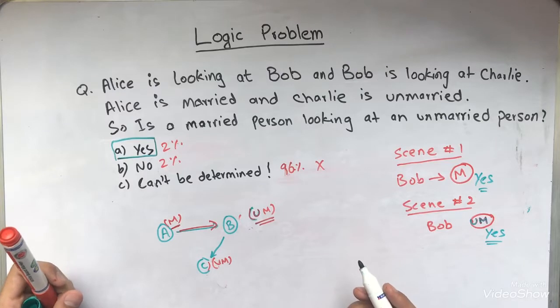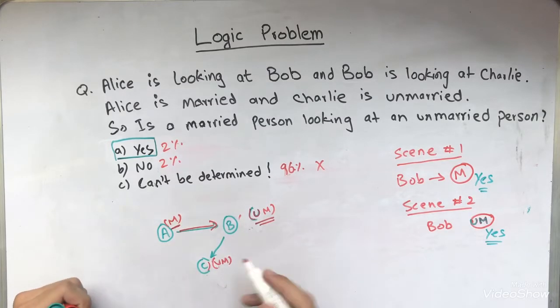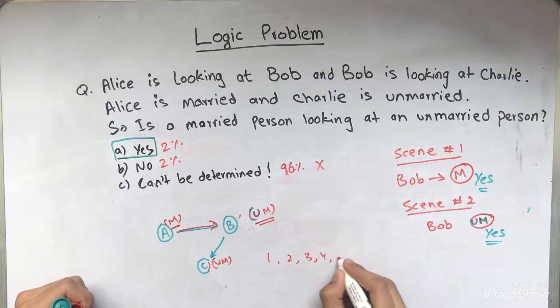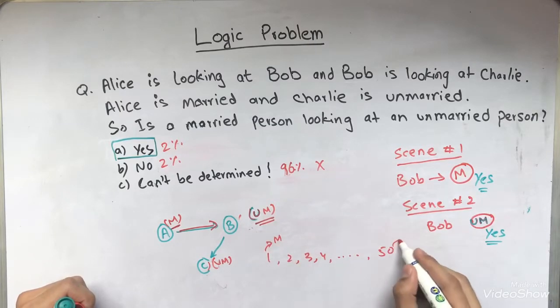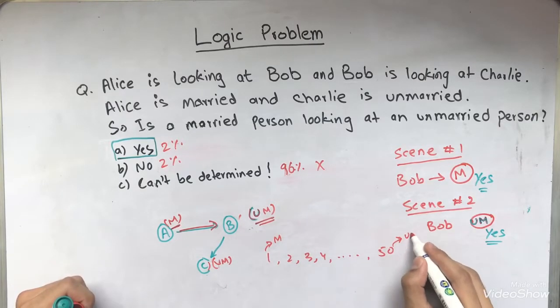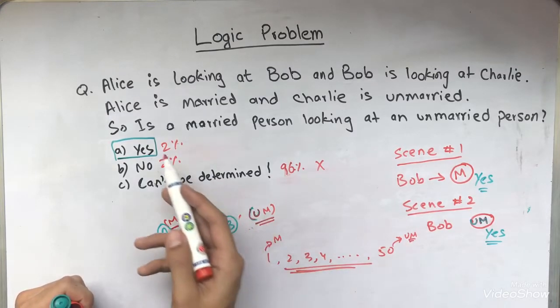We can use a similar logic in many other problems. Like I just found another problem that was similar, that actually had a similar logic in it. That if we have people 1, 2, 3, 4, up to 50. So if the first person is a married person and the last person, the 50th person, is unmarried, and we do not know about all the other people that are in between. So is a married person looking at an unmarried person then?